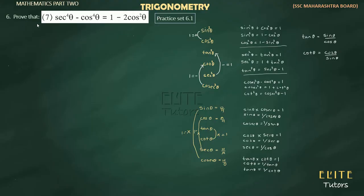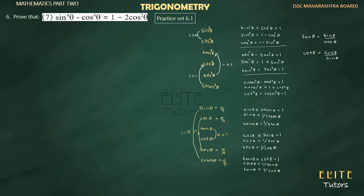Students, question number 7 has a mistake — 'sec raised to 4 theta' should be 'sine raised to 4 theta'. Let's correct it. So the corrected question is: sine raised to 4 theta minus cos raised to 4 theta, and we have to prove that it equals 1 minus 2 cos squared theta.